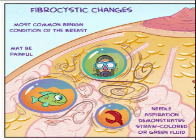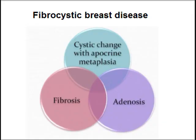Today we are going to discuss fibrocystic changes of the breast, the most common benign condition of the breast. There are three components in fibrocystic disease of the breast: cystic changes with apocrine metaplasia, fibrosis, and adenosis.